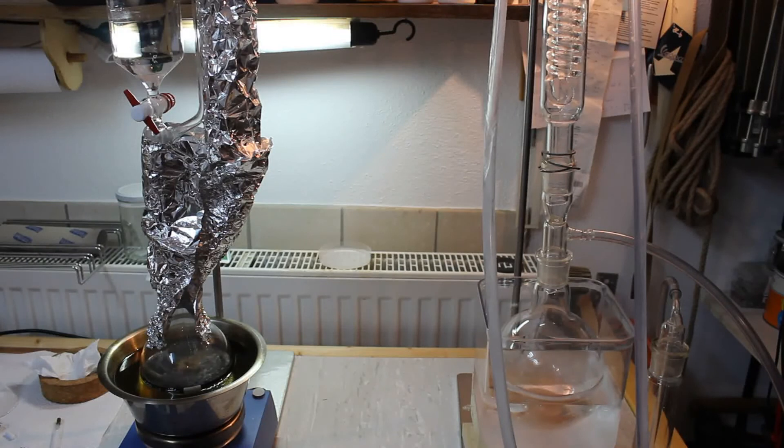I had to insulate the Vigreux column with some aluminum foil since the ether couldn't make it over and I had to overheat the reaction flask thus producing too much ethylene gas.